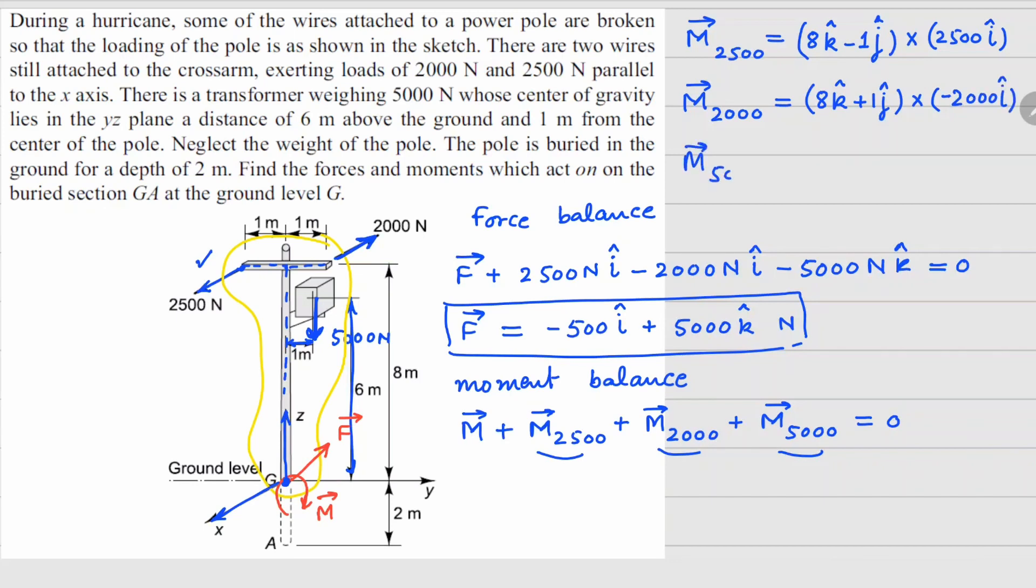And the last one, which is 5000 newtons. So I start from G, go up to this point here and then go right. So going up is 6 k cap. And going right is plus 1 j cap. And the force in this case is downwards. So it's going to be minus 5000 k cap.